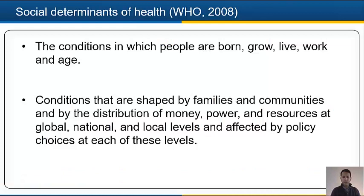When we are talking about social determinants of health, we refer to the conditions in which people are born, grow, live, work and age, since all these conditions will influence their health. These conditions are shaped by families and communities and by the distribution of money, power and resources at global, national and local levels, and they are affected by policy choices at each of these levels.